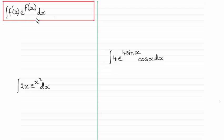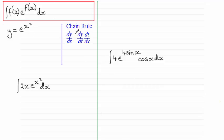The best way to understand this is by taking y equals e to the power x squared and differentiating it. We need to use the chain rule, so we have dy/dx equals dy/dt times dt/dx, and I'd make the substitution t equals x squared, so y equals e to the power t.